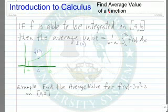Let's look at finding the average value of a function. If f is able to be integrated on the closed interval a, b, then the average value, and we're going to call it f of c, is 1 over b minus a times the integral from a to b of f of x dx.